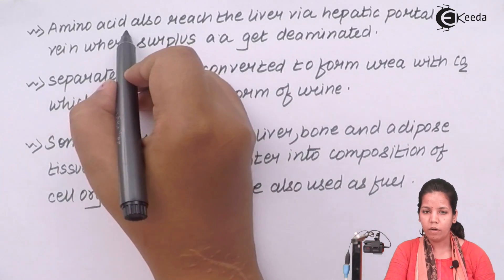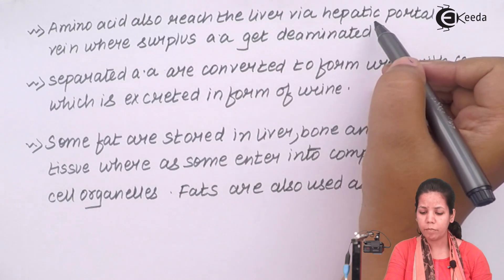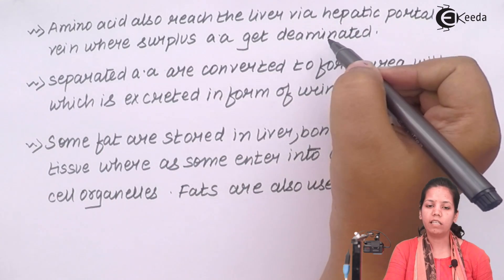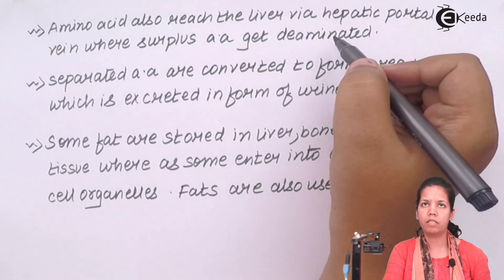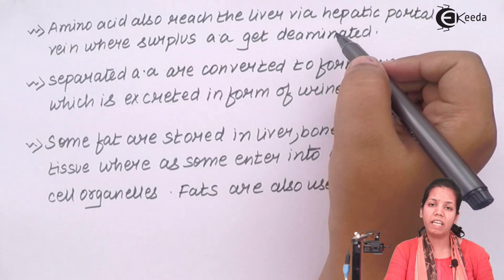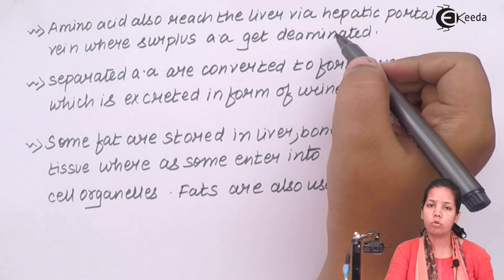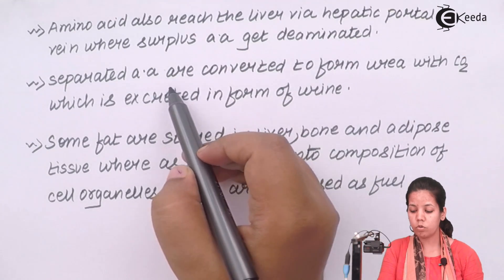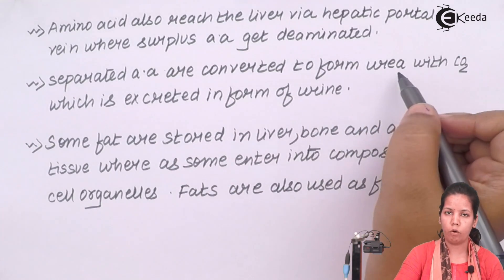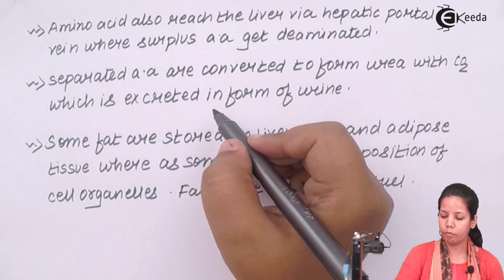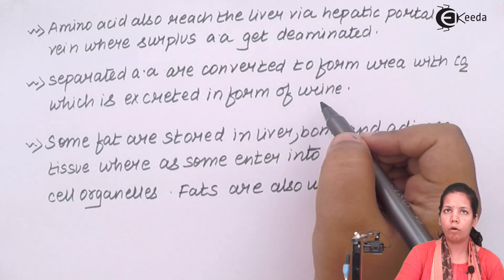Amino acids that reach the liver via the hepatic portal vein undergo deamination — meaning eventual breakdown or destruction — for amino acids not required as a source of energy. The separated amino acids are then converted into urea by combining with CO2, and these are secreted out from the body in the form of urine.